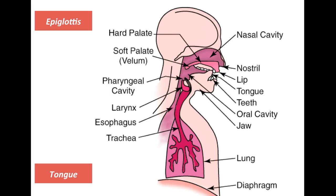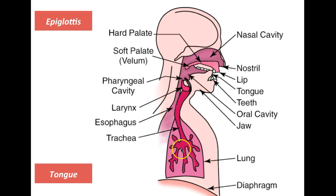Let's begin with the diaphragm. The diaphragm is right over here. Its function is basically this: it expands and it contracts. When it expands, it sucks air into the lungs, and when it contracts, it pushes air out of the lungs. The lungs store the air and also distribute oxygen to our bloodstream, but in the case of speech, they store air.